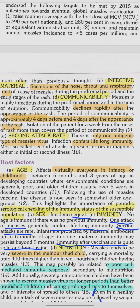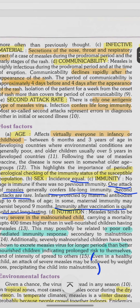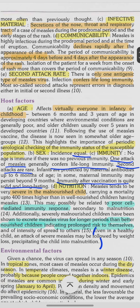Second attack rate is not common in measles because there is lifelong immunity once a person acquires the disease, as there is only one antigenic type of measles virus. Regarding age, virtually everyone affected is in infancy and childhood.